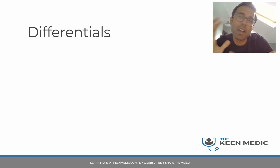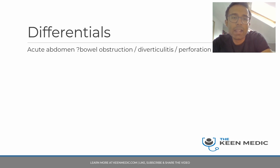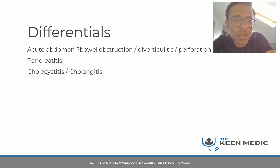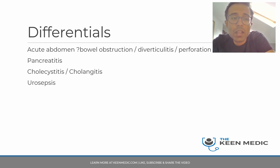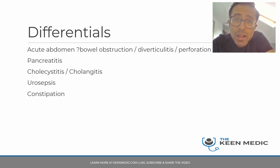The differentials at this point: does this man have an acute abdomen? He has had appendicitis before — could this be bowel obstruction, diverticulitis, or perforation? Pancreatitis is another consideration given his cirrhosis, possibly due to alcohol. Cholecystitis and cholangitis are possible given his age. Urosepsis can happen in any patient. Constipation is less likely given his tachycardia and hypotension.